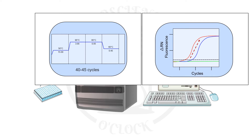The reaction includes a control to confirm the RNA extraction and its integrity. There is a positive control of transcribed RNA from SARS-CoV-2 and a negative control that gives no signal. In this example, the presence of a sigmoid curve indicates a positive result for SARS-CoV-2 infection.